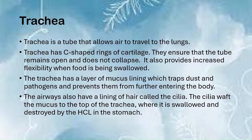The trachea is a tube that allows air to travel to the lungs. It has C-shaped rings of cartilage that ensure the tube remains open and does not collapse, and provides flexibility when food is being swallowed. The C-shape rather than a complete ring allows that flexibility — a complete ring would reduce the lung's flexibility. The trachea also has a mucus lining which traps dust and pathogens. The airways have cilia that waft mucus to the top of the trachea, where it is swallowed and destroyed by hydrochloric acid in the stomach.